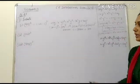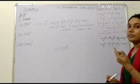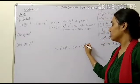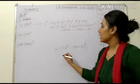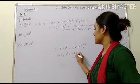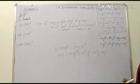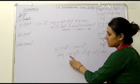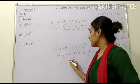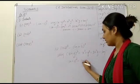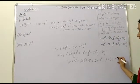Second part: 102 cube. Write 102 as 100 plus 2, so 100 plus 2 whole cube. Apply x plus y whole cube: x cube plus y cube plus 3x square y plus 3xy square. Here x is 100 and y is 2. Expanding: 100 cube plus 2 cube plus 3 times 100 square times 2 plus 3 times 100 times 2 square. Compute each term using the known value of 100 cube.